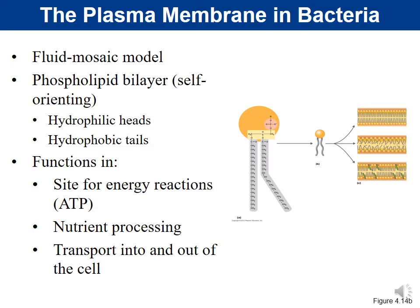The cell membrane is described by the fluid mosaic model. This means the membrane is a fluid structure — not rigid, more liquidy and fluid. The mosaic part refers to the different types of proteins embedded in the membrane that do a variety of things. A typical erythrocyte (red blood cell) has about 50 different types of proteins embedded in the membrane. One main component of the cell membrane is the phospholipid bilayer, which is amphipathic — having a hydrophilic head and a hydrophobic tail.